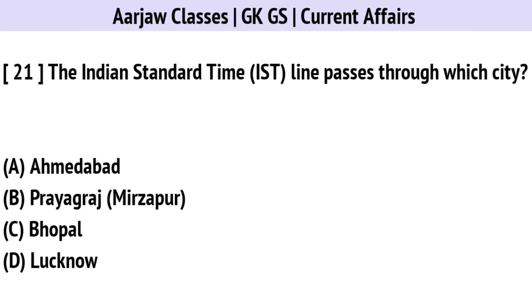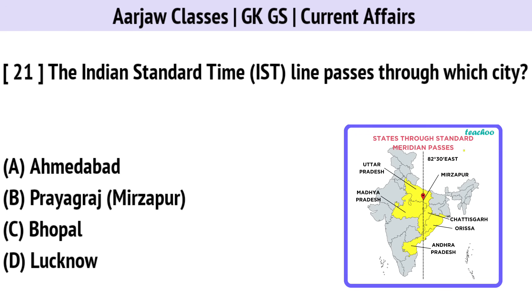The Indian Standard Timeline passes through which city? Correct option is B — Prayagraj.